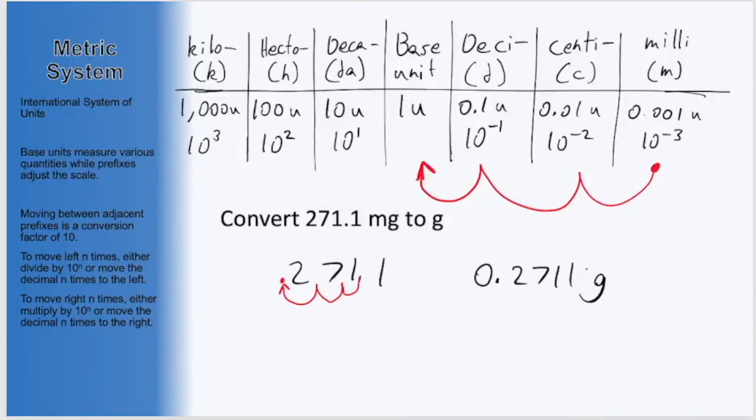With that, we have shown the relative simplicity of the metric system and how easy it is to convert between units. Understanding how to convert between these units is particularly important in the fields of science. Until next time.